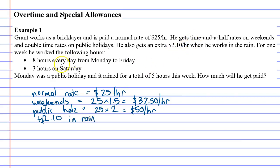For one week he worked the following hours: he worked eight hours every day from Monday to Friday, three hours on Saturday. Monday was a public holiday, and it rained for a total of five hours this week. How much will he get paid? There's a lot of information there, but let's work through it.